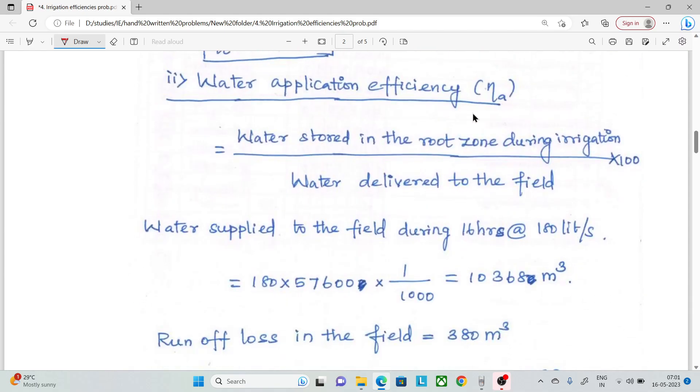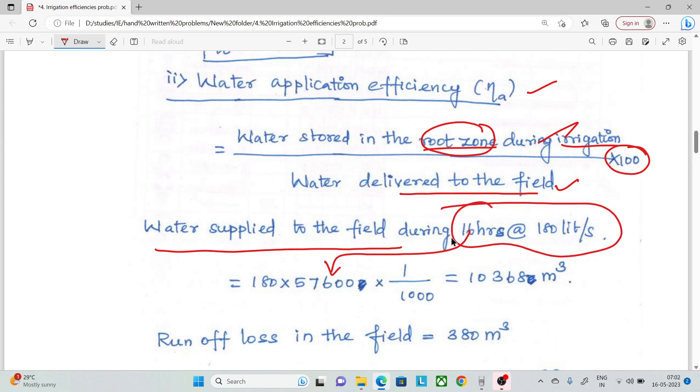Now, the application efficiency. If you apply the water in the field, water is stored in the root zone during irrigation. We use water delivered to the field. Water supplied to the field during 16 hours is 180 liters per second. In 16 hours in seconds, we have 180 liters per second. Convert to cubic meters by dividing by 1000.